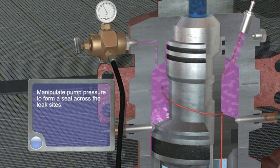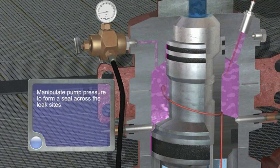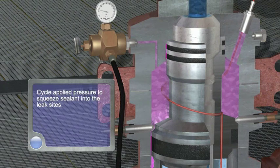Manipulate pump pressure to form a seal across the leak sites. Cycle applied pressure to squeeze sealant into the leak sites.